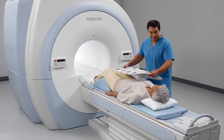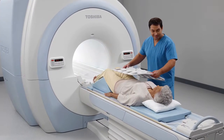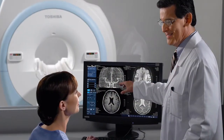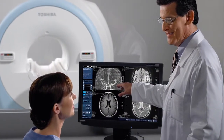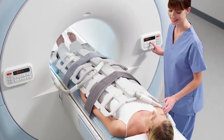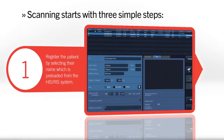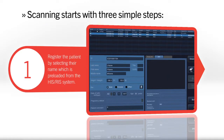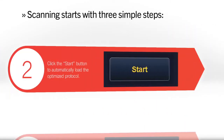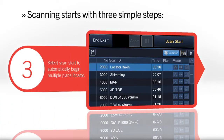mPower is not only easy to use, it's also easy to learn. Technologists of any skill level can utilize its functionality and scan with confidence since scanning starts with three simple steps: 1. Registering the patient name from the preloaded HIS/RIS system. 2. Clicking on Start to load customized protocols. 3. Selecting Scan Start.